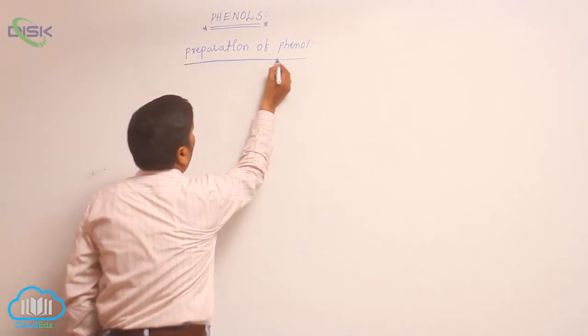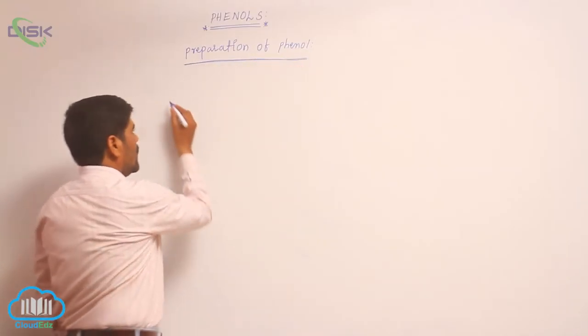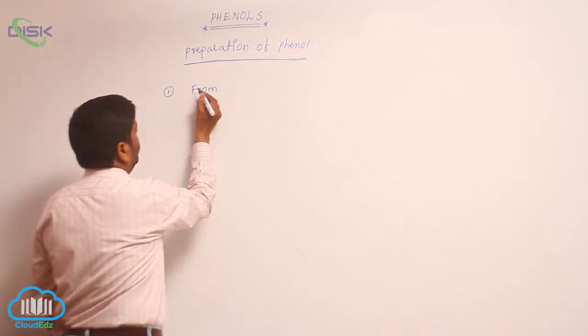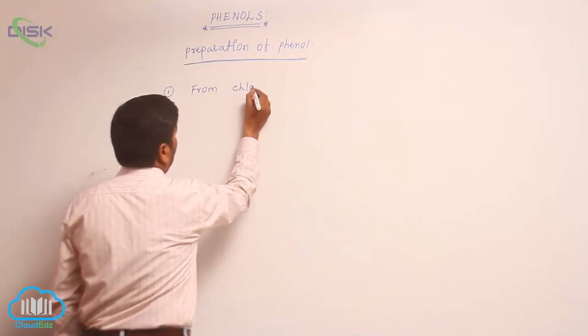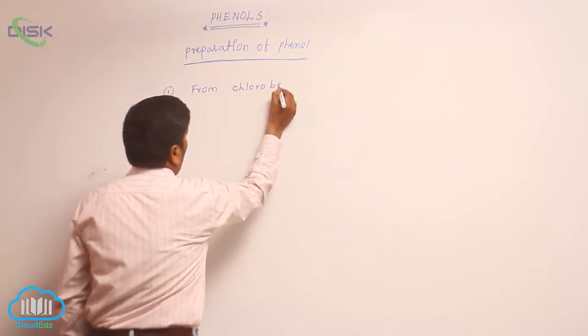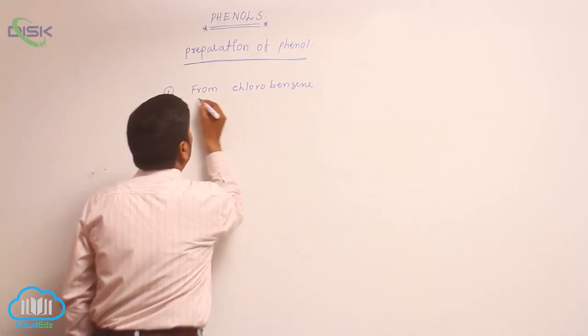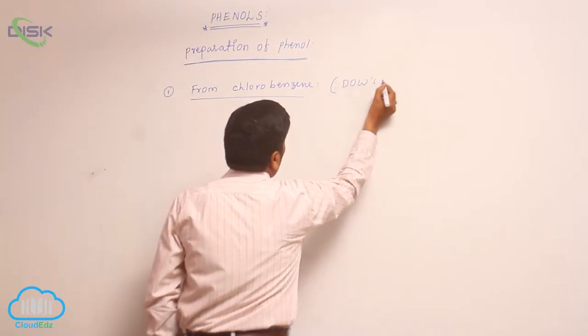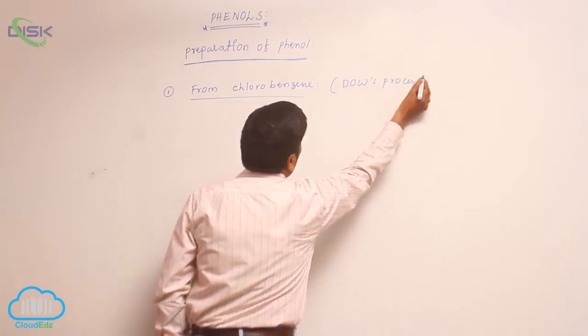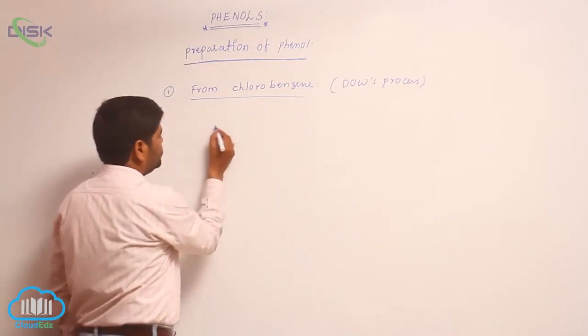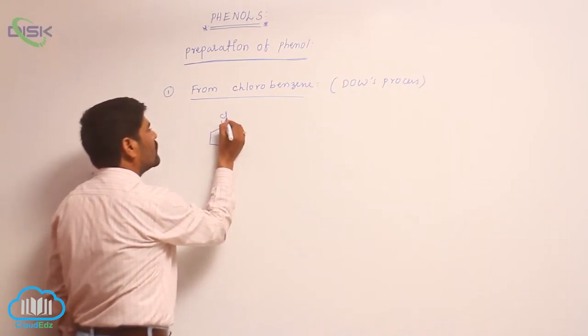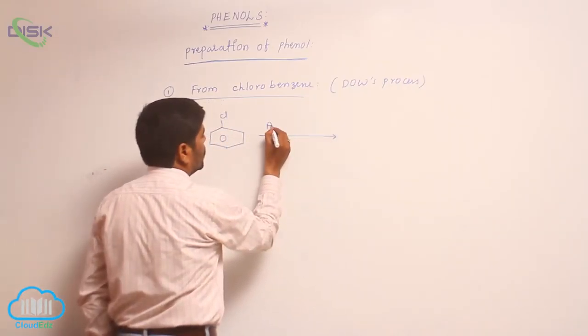Preparation of phenol, number 1, from chlorobenzene. This particular process is known as Dow's process. Chlorobenzene reacts with aqueous sodium hydroxide at 300 to 350 degree centigrade and 300 atmosphere pressure.